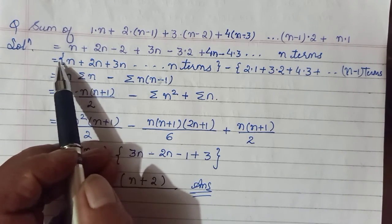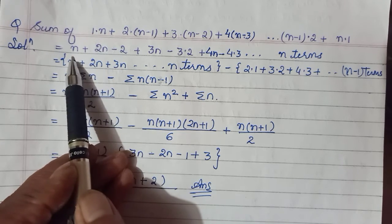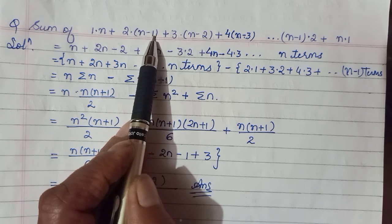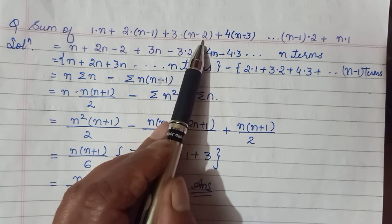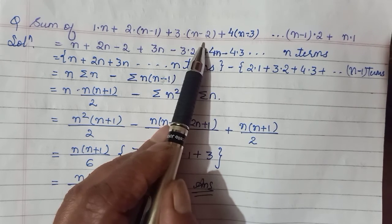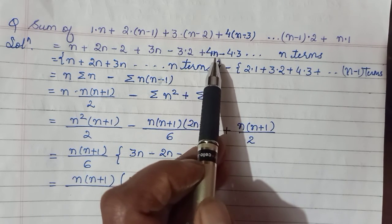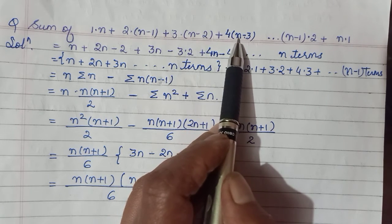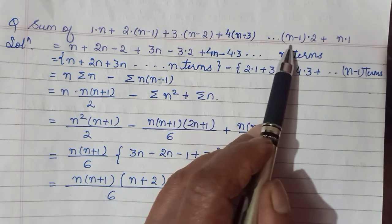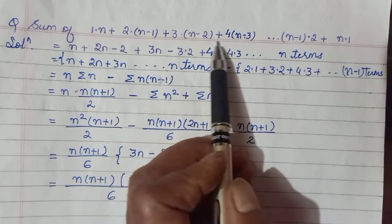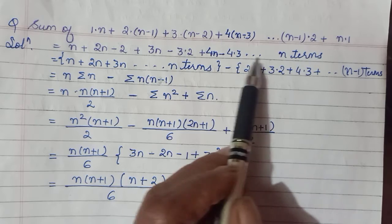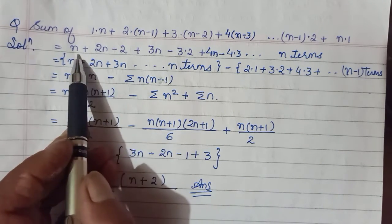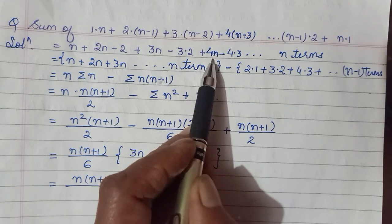So for that, now if you see, 1·n that becomes n. This 2 can be distributed inside so this will become 2n - 2. Yeh 3 andre distribute ho ga toh 3n - 6. 6 likho ya 3·2. 3 into 2 likh diya hai because woh ek sequence banegi. So I am not multiplying it, rating it as 3·2. This one will give us 4n, 4·3. So as we will have total n terms, we will have total n terms, so so many terms are there.